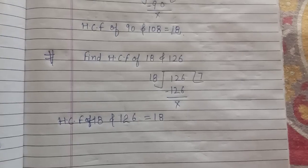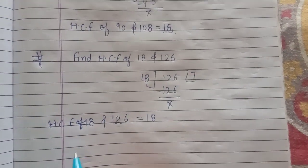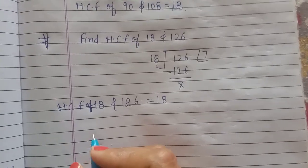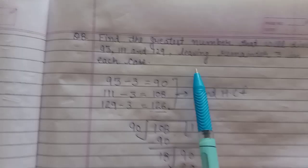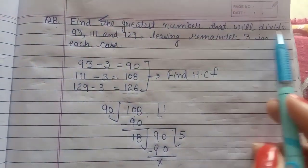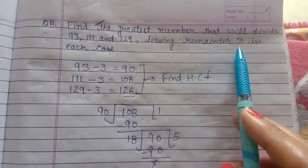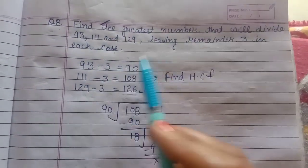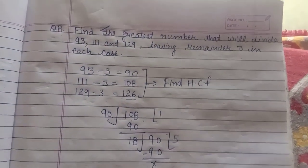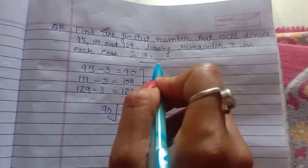So the overall HCF, or the greatest number that will divide these three numbers leaving remainder 3 in each case, is 18. You can write it like this.